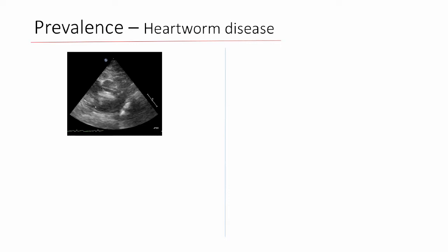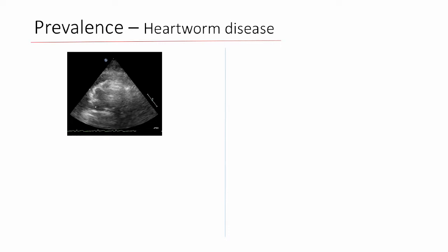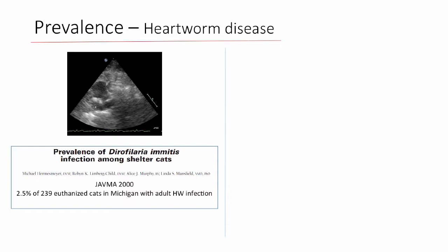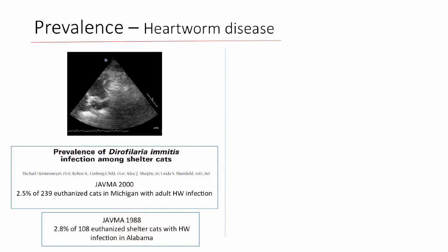I want to touch on heartworm disease. This echo of a cat shows heartworm echoes in the main pulmonary artery and right ventricular outflow tract. The incidence of heartworm disease varies depending on region, but we're all touched by it because of movement of dogs and climate. Two postmortem studies — one from Michigan, one from Alabama — found that 2.5 to 2.8 percent of cats had heartworms at necropsy, giving an idea that this disease is certainly out there.